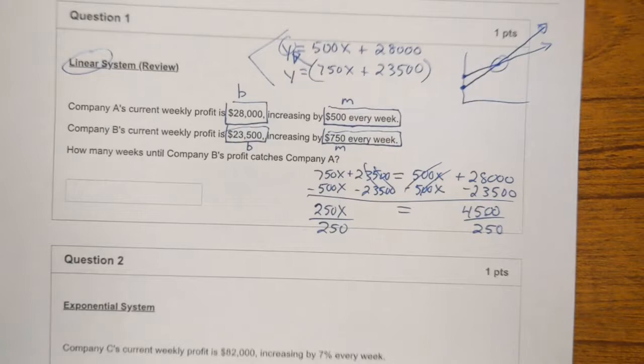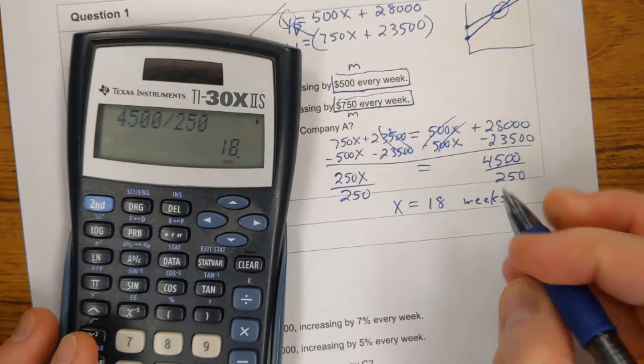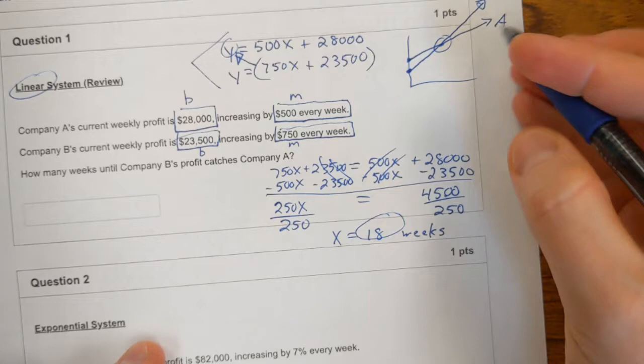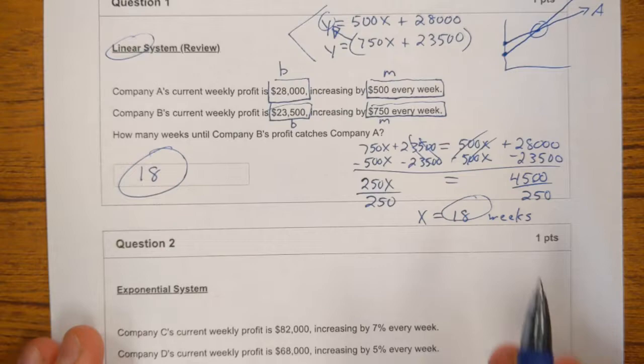And then I divide both sides by 250. And I think this one comes out pretty nice and clean. 4,500 divided by 250. Yeah, it comes out to 18 weeks. After 18 weeks, company B will catch up. And then after 18 weeks, it will actually surpass company A. In Canvas, you just type the 18. You don't type the weeks. It only takes numerical answers.